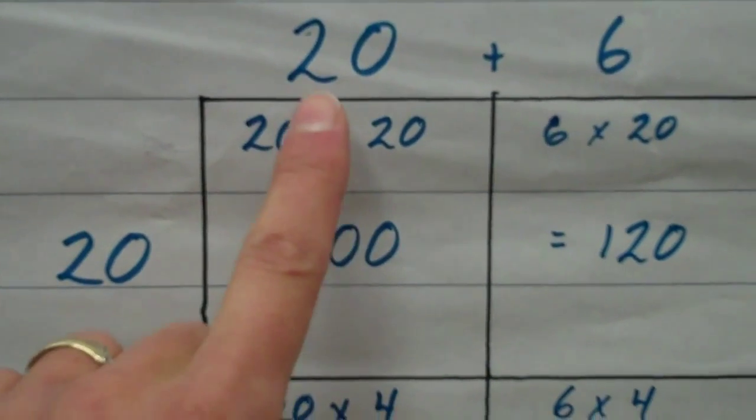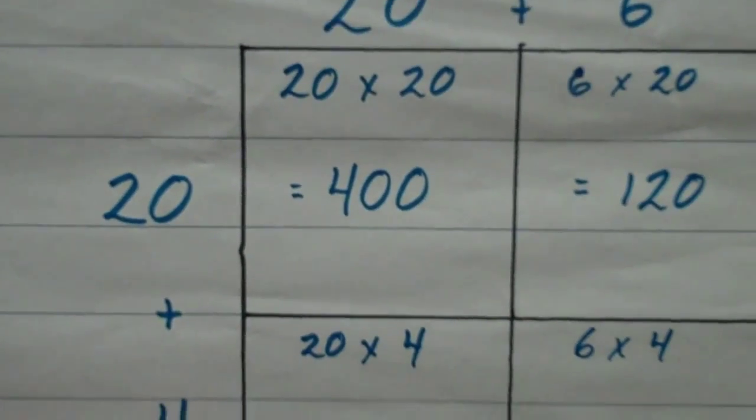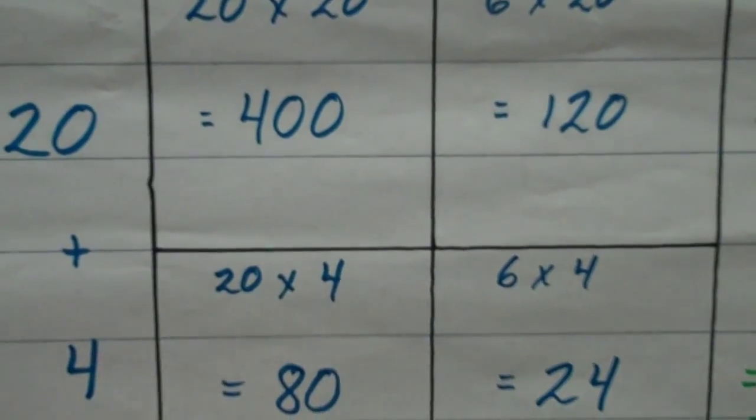Down here, I'm going to have 20 and 4, I multiply those two numbers, 20 times 4 equals 80.